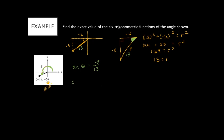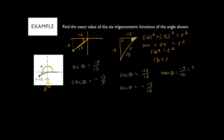Cosine is adjacent over hypotenuse: the adjacent side is negative 12 and the hypotenuse is 13, so cosine of theta equals negative 12 over 13. The reciprocal, secant, is negative 13 over 12. Tangent is opposite over adjacent: negative 5 over negative 12, and those negatives cancel to give 5 over 12. The reciprocal, cotangent, is 12 over 5.